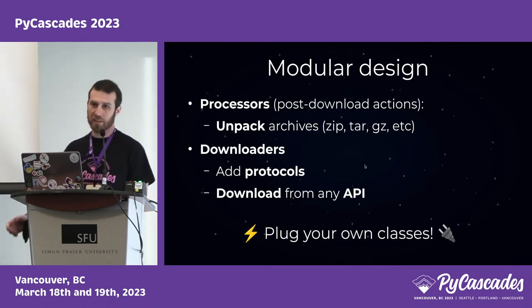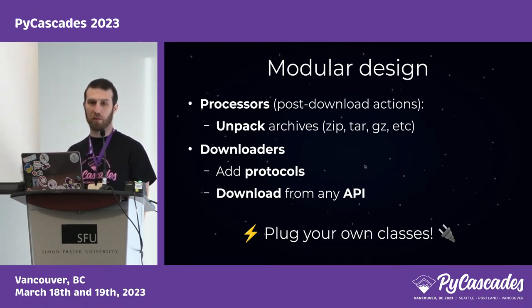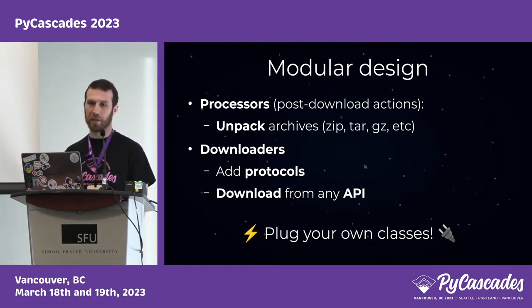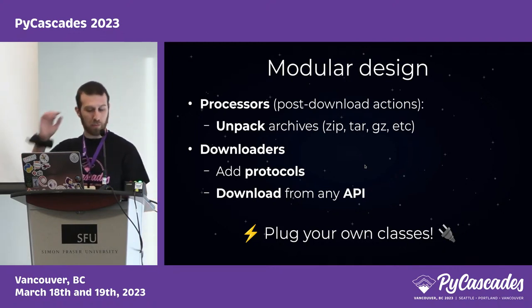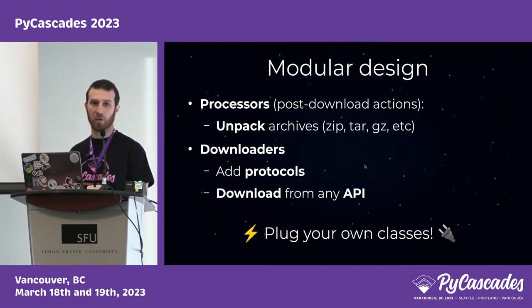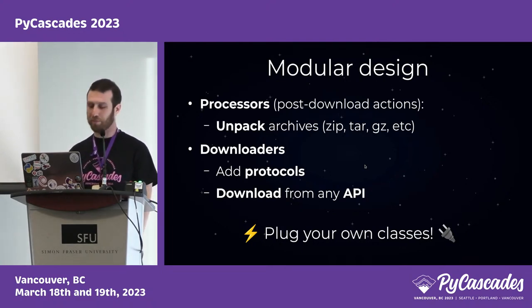Pooch has a very modular design. For example, you can define processors that perform some post-download actions — if you want to unpack archives after they've been downloaded, you can totally do that, and you can define your own processors. We also have downloaders, so if you want to use a protocol we don't currently support, you can write your own downloader. You can also write downloaders for interacting with any API that could be hosting your files. Feel free to plug in your own classes.